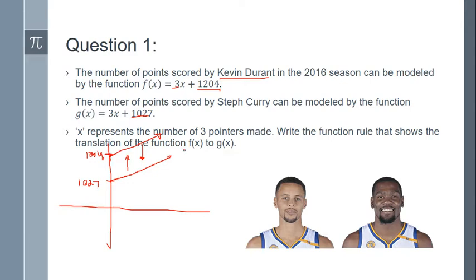That can happen just by shifting this up or shifting the other one down, depends on how they write what they want you to do. In this case, they want us to translate f(x) to g(x). So f(x) is the top one, the one for Kevin Durant. So here's f(x), and here's g(x). To get from f(x) to g(x), it looks like we had to go down. We had to go down whatever this difference is. How much do we shift it down? We're going to take 1204 and subtract away 1027.